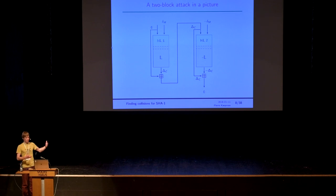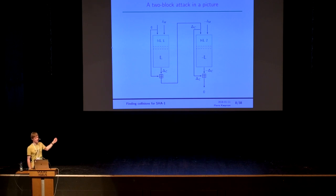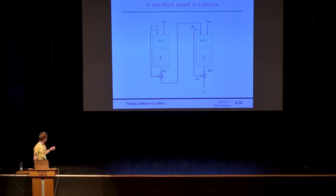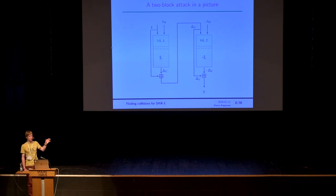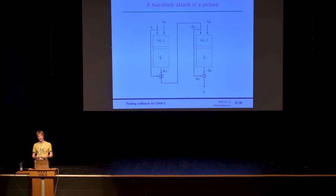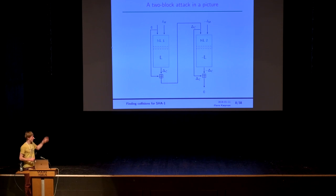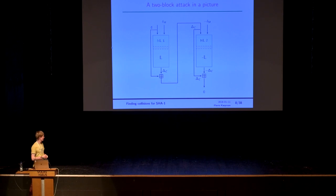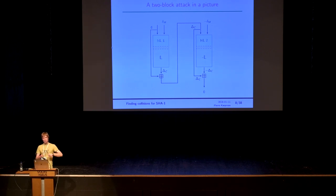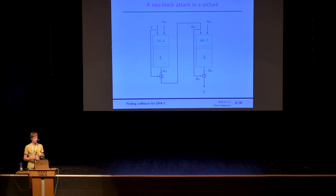That's the idea of the main structure of the attack. Of course, it's not so easy to actually find those messages that produce the right differences. First, we have the nonlinear part — the NL thing is a nonlinear differential path that is hard to find but easy to satisfy. Then we have a linear part where the real probabilistic cost of the attack will be. In the middle are the accelerating techniques, which try to delay as much as possible the start of the probabilistic phase.